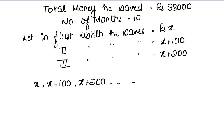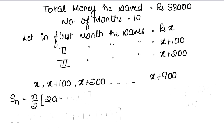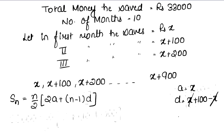So this is our AP up to 10 months. The first term a equals x, and the common difference d equals 100 (since x+100 minus x gives 100). So a = x and d = 100.